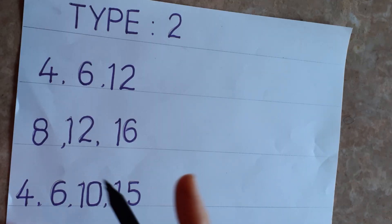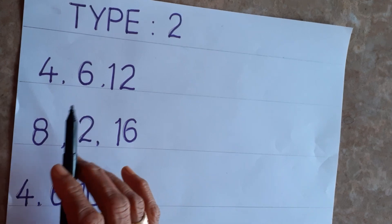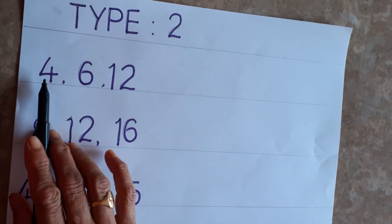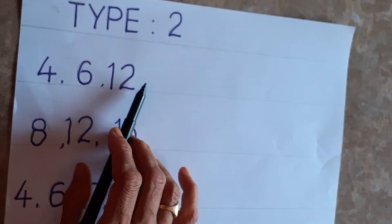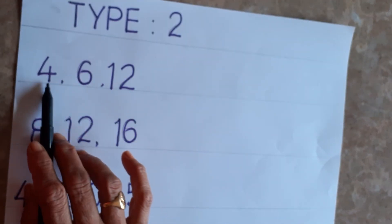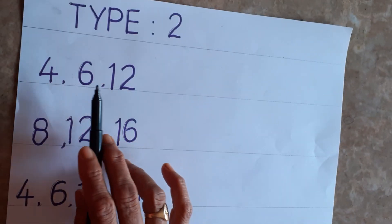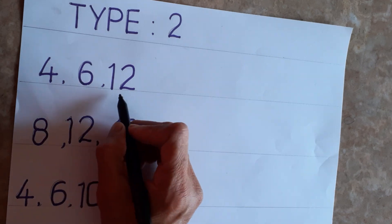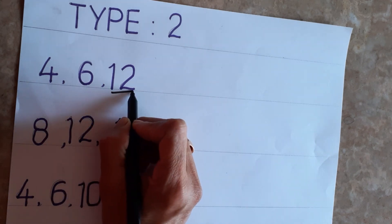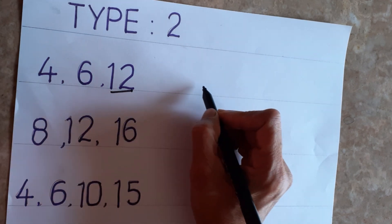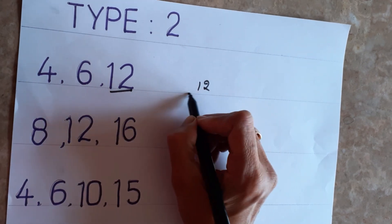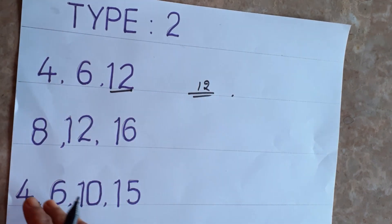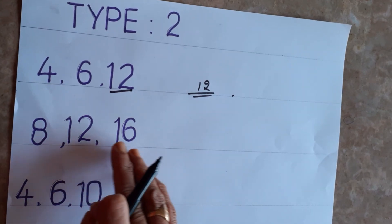Now Type 2 — what to do when the highest number doesn't divide all others. For 4, 6, and 12: 4 divides into 12 and 6 divides into 12, so the LCM is 12 itself. But for 8, 12, and 16, notice that 12 does not divide into 16 — so we need a different approach.